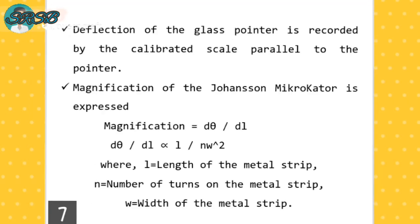Deflection of the glass pointer is recorded by the calibrated scale parallel to the pointer. Magnification of the Johansson Microkator is expressed as: magnification equals dθ divided by dl. dθ/dl is proportional to 1 divided by nw squared, where l equals the length of the metal strip, n equals the number of turns on the metal strip, and w equals the width of the metal strip.